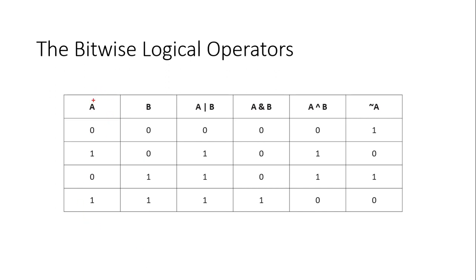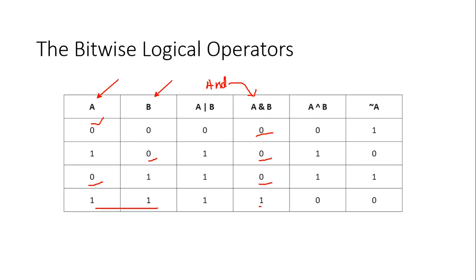Let's recall what we studied in digital computer fundamentals. For the AND operator: 0 AND 0 = 0, 1 AND 0 = 0, 0 AND 1 = 0, and 1 AND 1 = 1. The condition for AND is: if any one of the operands is 0, AND will always give 0. Only when both operands are 1 does AND give 1.